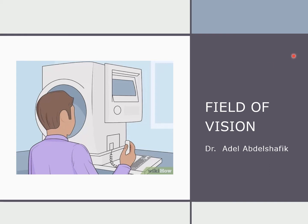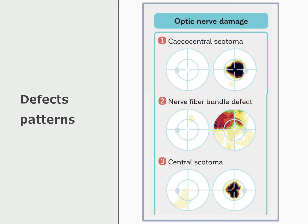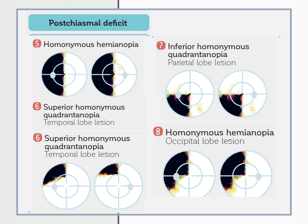This is the final part of this lecture on visual field, Humphrey versus Octopus. Now we come to defect patterns. These are different examples of defect patterns: they can be centrocecal, non-fiber defect, centroscotoma, hemianopia, or quadranopia.